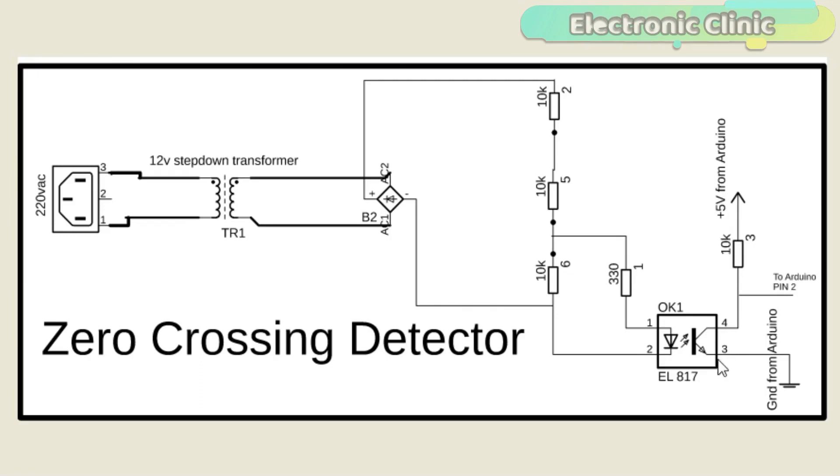The emitter of the EL817 is connected with the Arduino's ground. Pin number four which is the collector is also connected with the Arduino's pin number two. As you can see clearly the Arduino side has no physical connection with the transformer side, so if anything happens on this side will have no effect on the other side.